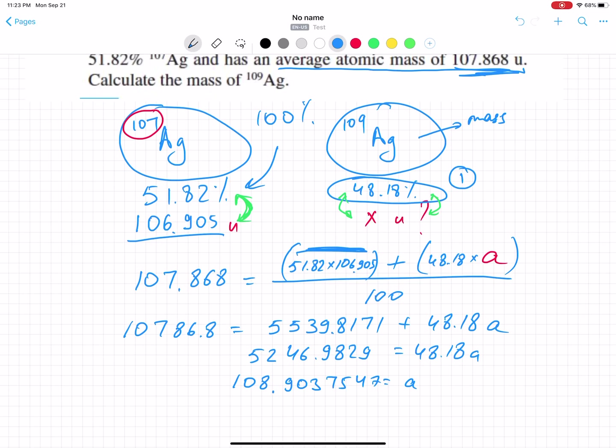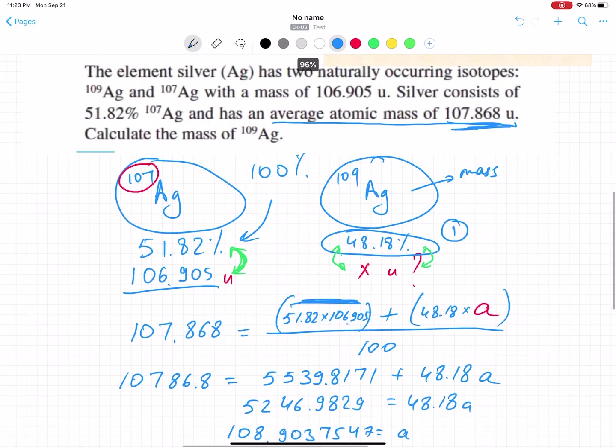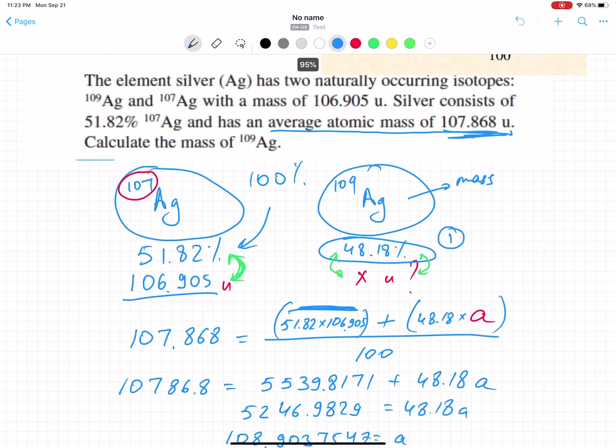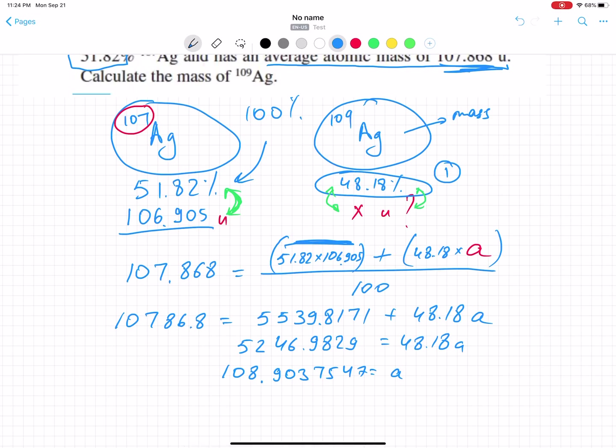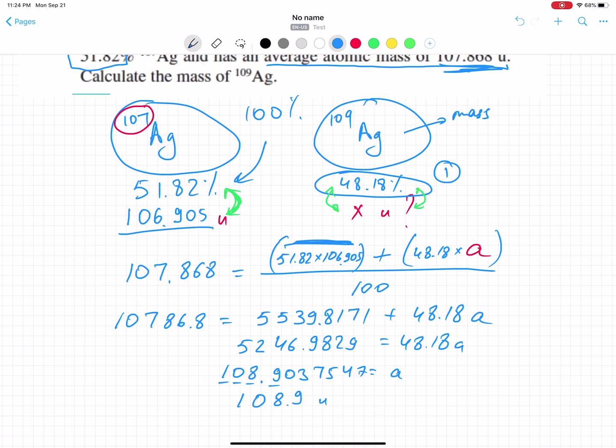That's not our final answer. We need to look at significant figures. How many significant figures did they provide in the beginning? We have six significant figures here and four significant figures. When working with percentages, you're going to choose the least one. So that's 108.9 unified atomic mass units, and this will be our answer.